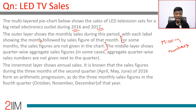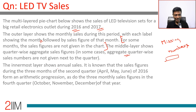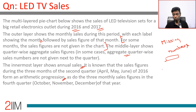The middle layer shows the quarter-wise aggregate — add up three months to get the quarterly aggregate. Aggregate data is not given for a few numbers. The innermost layer shows annual sales: three months to a quarter, four quarters to a year. It is known that the sales figures during the three months of the second quarter of 2016 form an arithmetic progression, as do the monthly sales figures in the fourth quarter of that year. In any arithmetic progression, the middle term is the average of the three terms.